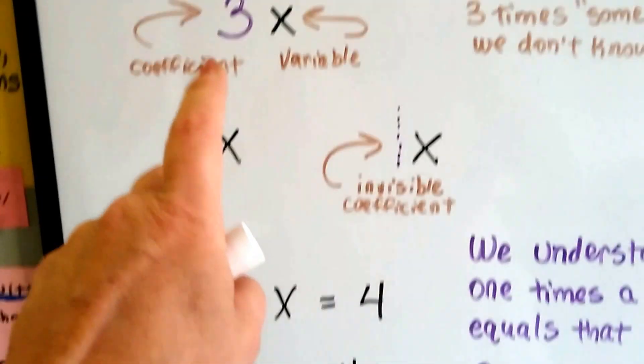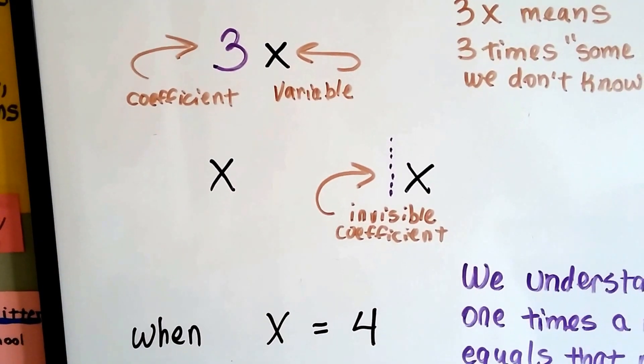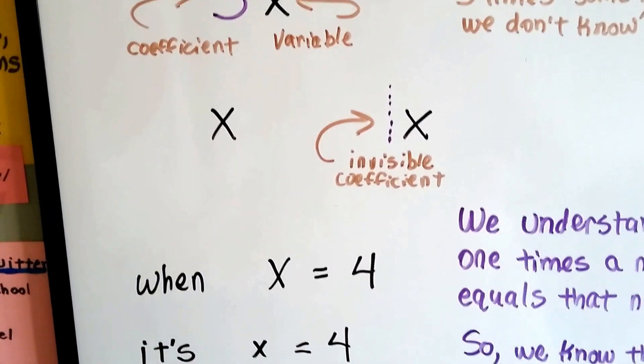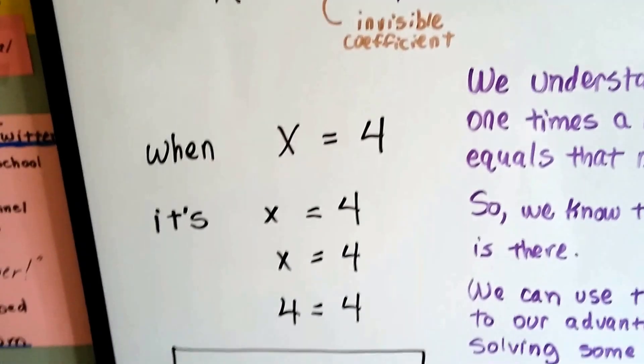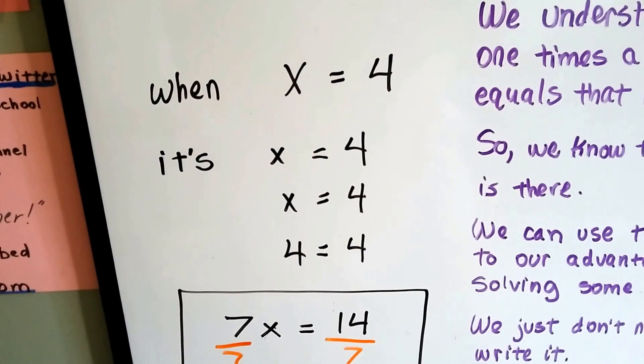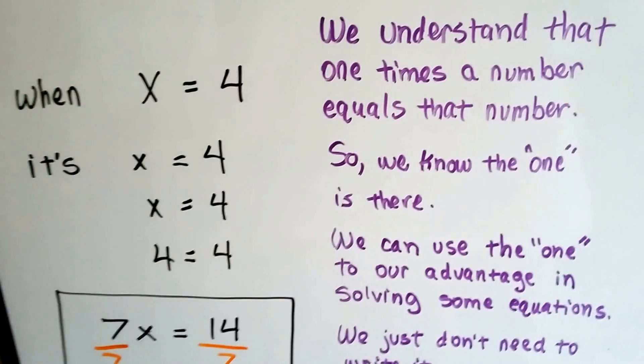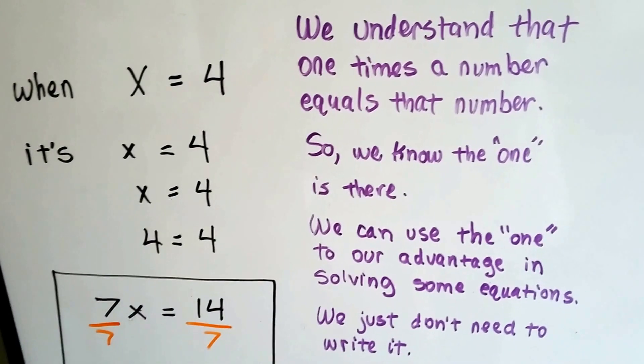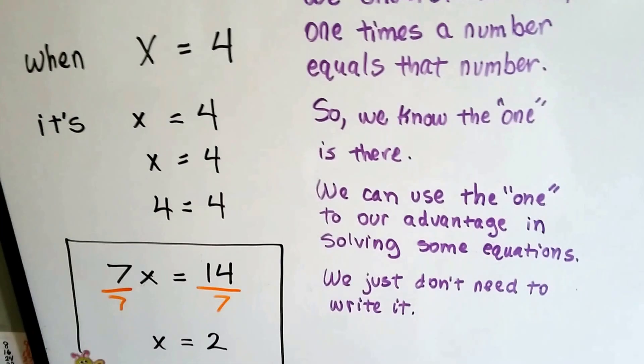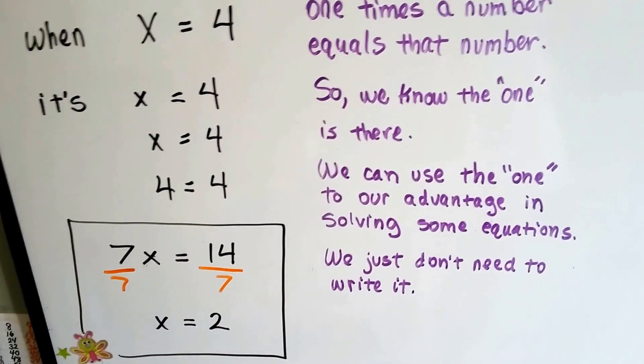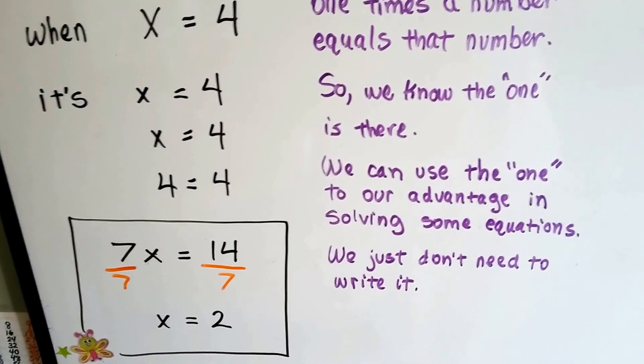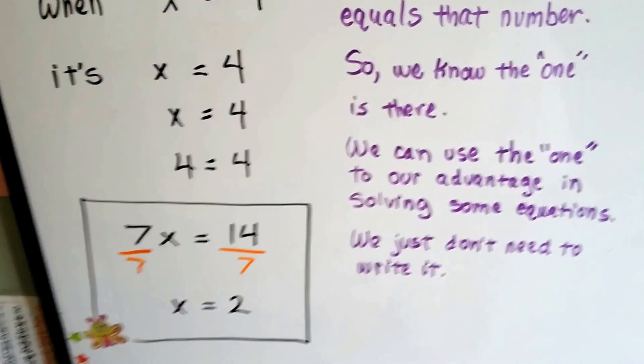When there's more than 1, then we start putting a 2 or a 3 or a 4 or a negative 2, negative 3, negative 4. But if it's a negative or positive, we don't put that invisible 1 there. We understand that 1 times a number equals that number, so we know the 1 is there. And we can use that invisible 1 to our advantage in solving some equations. We just don't need to write it.